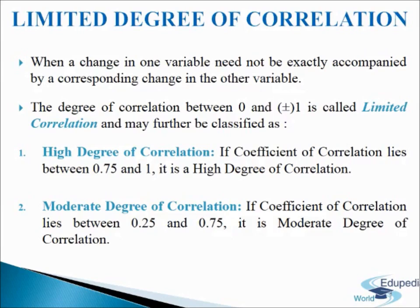It will be a high degree of positive correlation if the coefficient of correlation lies between positive 0.75 and plus 1, and it will be a high degree of negative correlation if the coefficient of correlation lies between negative 0.75 and negative 1.